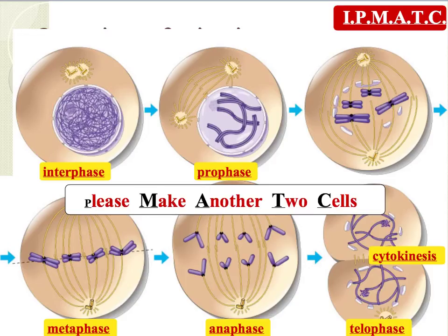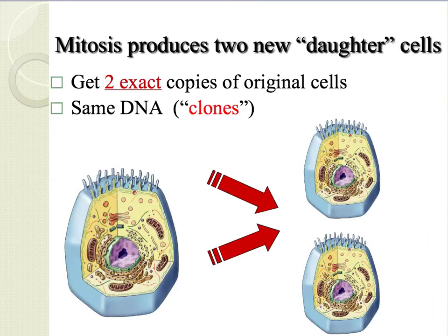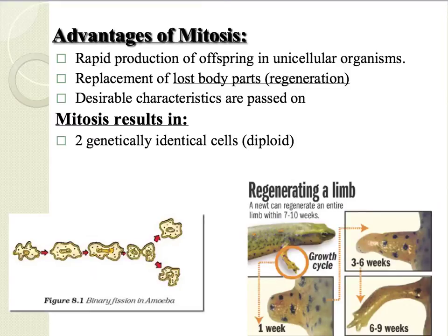This is a quick diagram that shows the difference between all of the stages in a cell cycle. Remember, mitosis produces two new daughter cells. Both of them are copies of the original cells — they have the same DNA, which pretty much makes them clones of each other. Advantages of mitosis include the rapid production of offspring in unicellular organisms such as amoebas and bacteria. In certain animals we see replacement of lost body parts — we call this regeneration. We also get desirable characteristics passed on to the next generation. Mitosis results in two genetically identical cells.